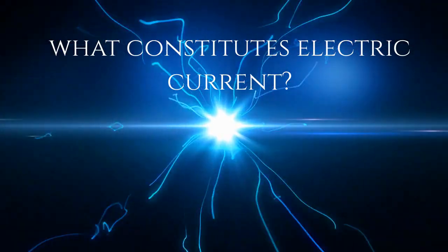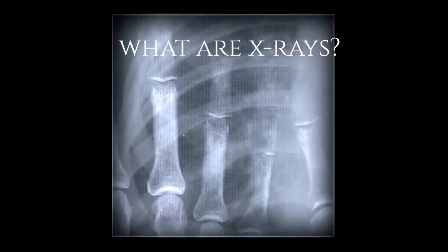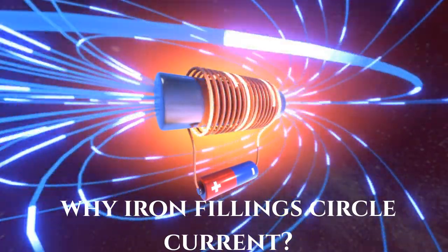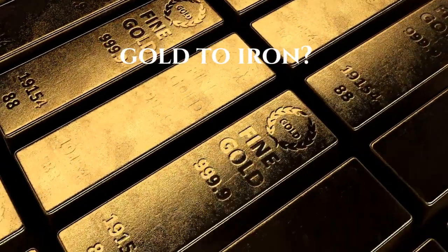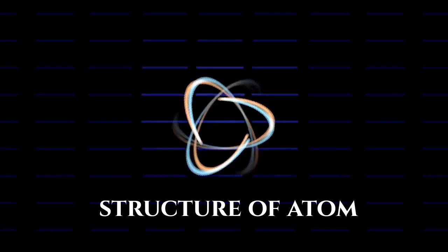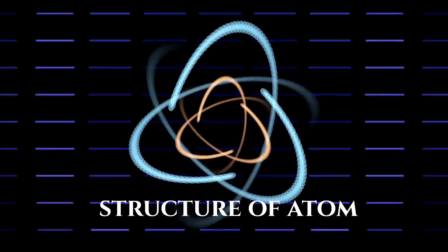What constitutes an electric current? What are X-rays? Why do iron filings form circles around current? How did Marie Curie get poisoned? Can iron transform into gold or vice versa? These are some of the questions that physicists were grappling with in the 18th and 19th century. Let's find out how answers to these questions reveal the structure of the atom.